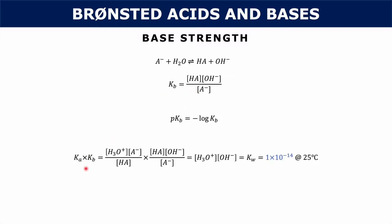The relationship between Ka and Kb is that if you multiply their general equilibrium expressions, some things cancel out — the A- cancels, and the HA cancels — and what you're left with is the hydronium ion concentration times the hydroxide ion concentration, which is the equilibrium constant Kw. Kw equals 1 times 10 to the negative 14 at 25°C. So Ka times Kb equals Kw. This is helpful because if you're given Kb and want Ka, you can divide Kw by Kb to get Ka.